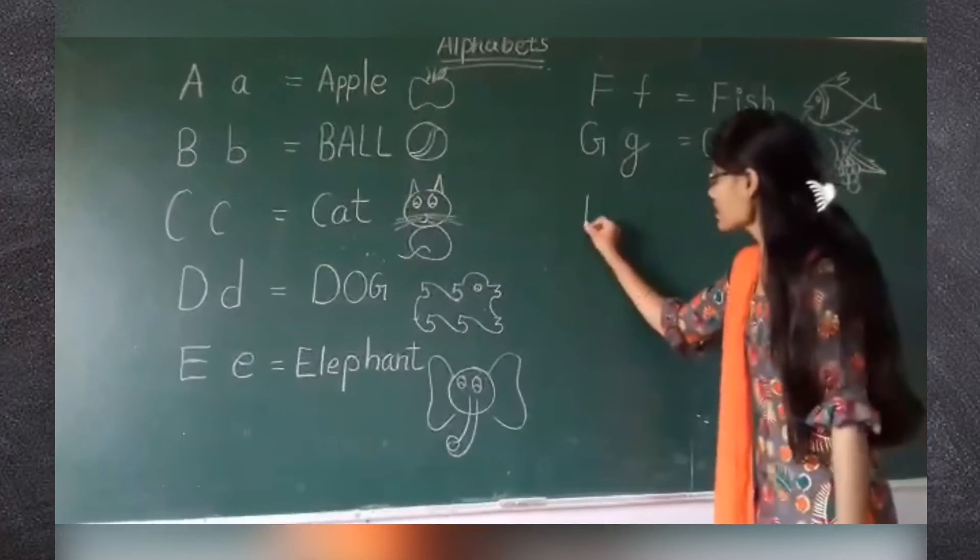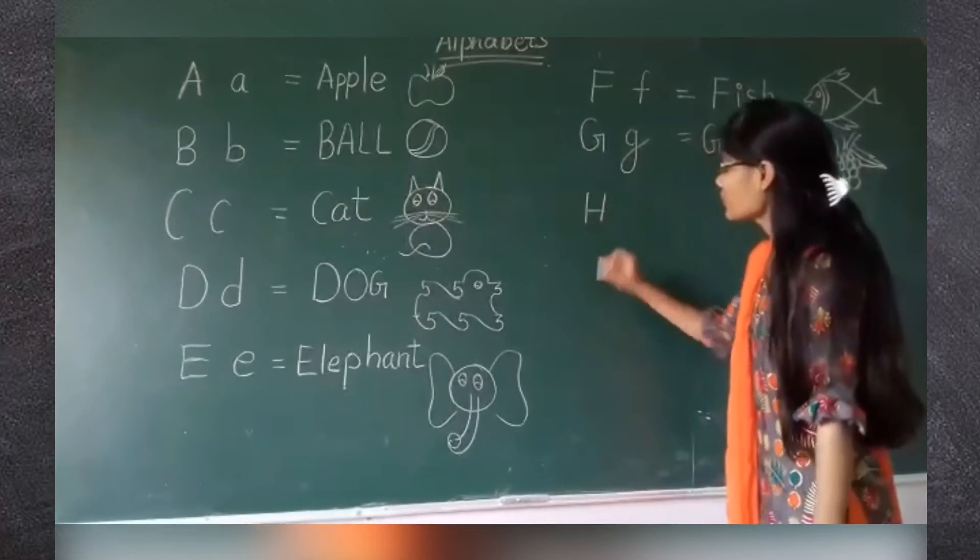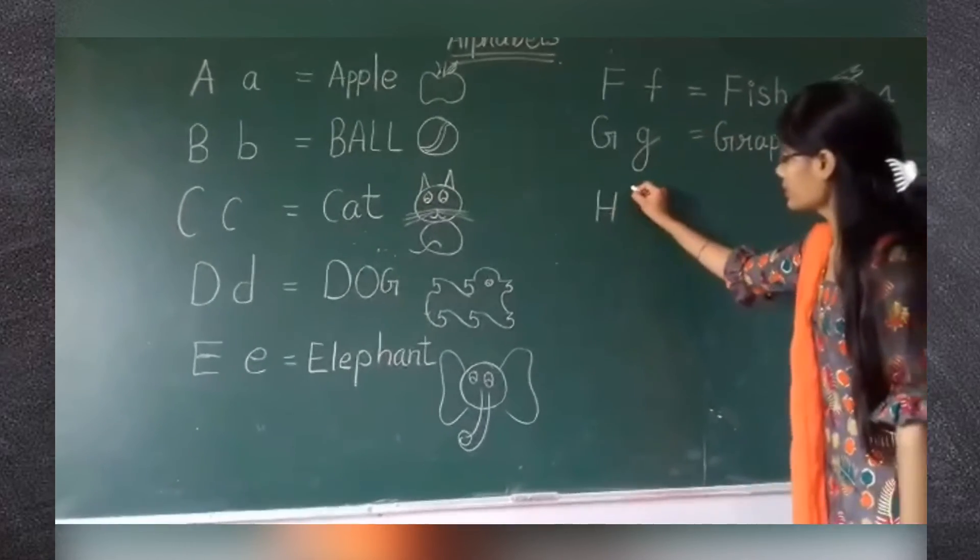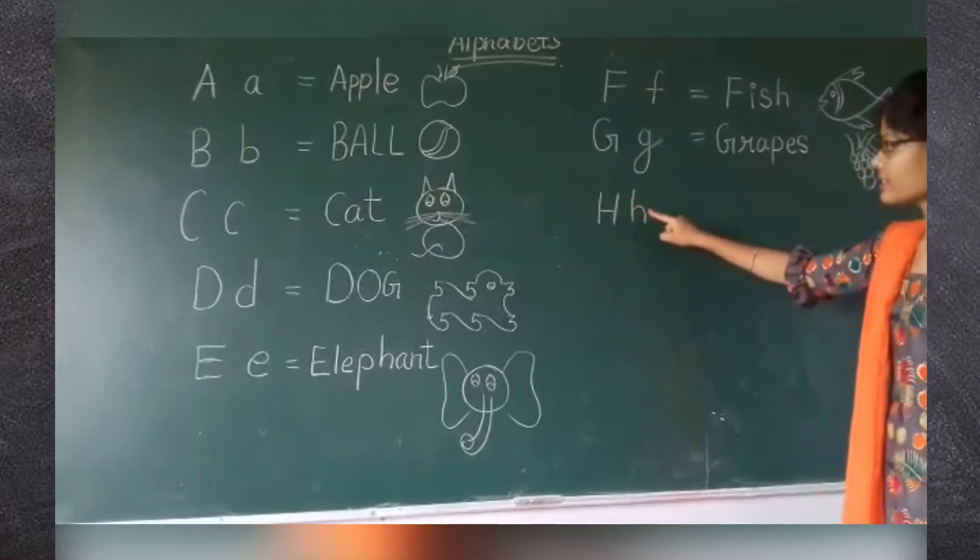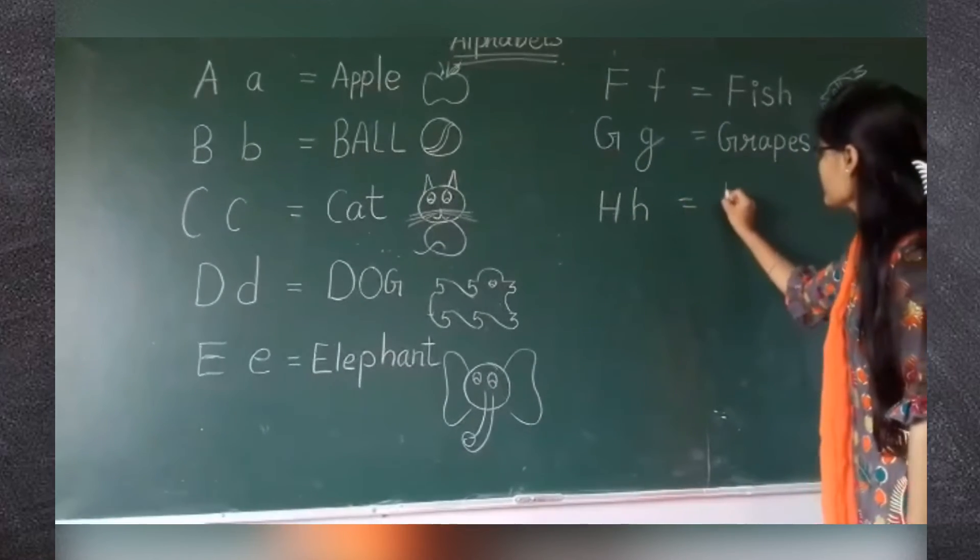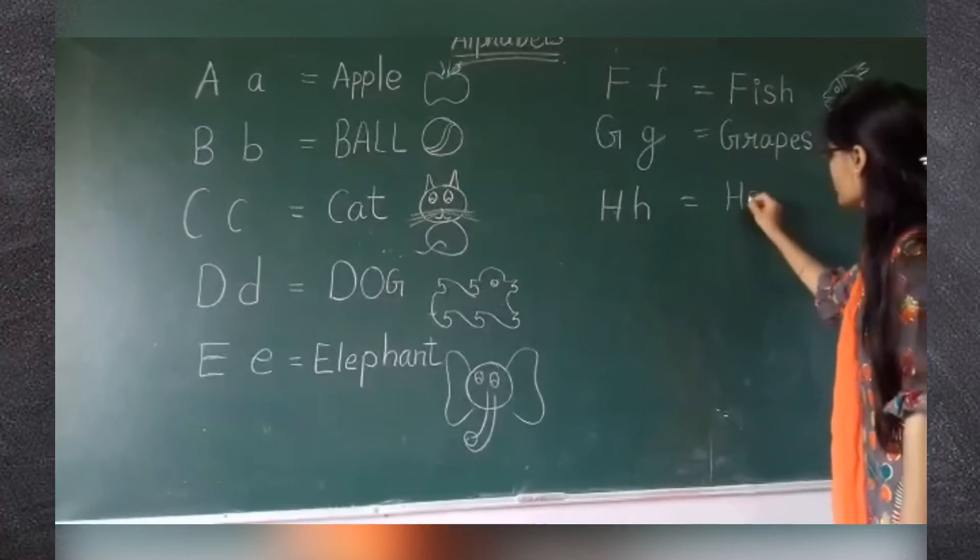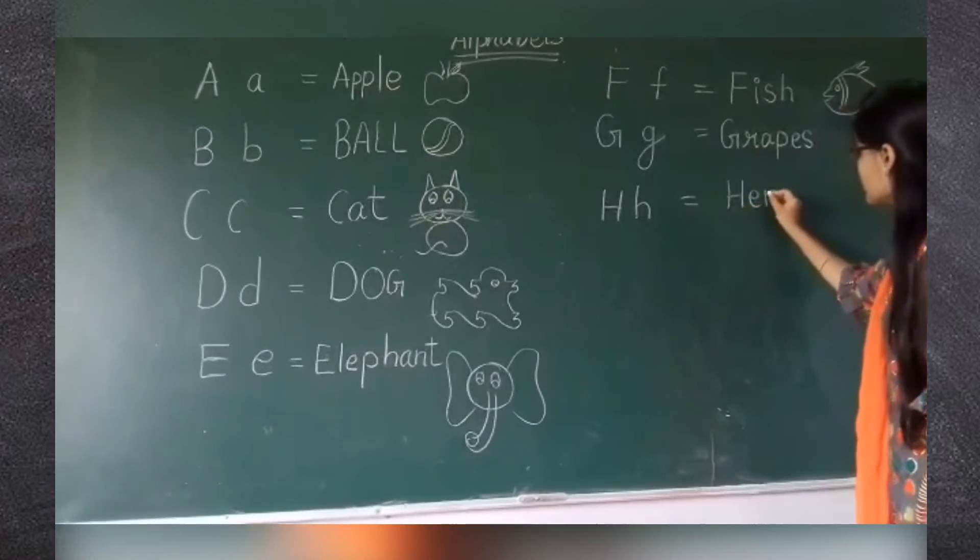Next letter is H. H for hen. Capital H and this is small h. Spelling of H is H-E-N. Hen.